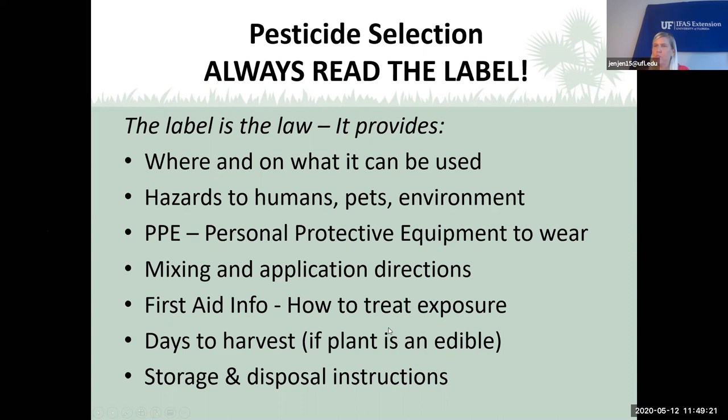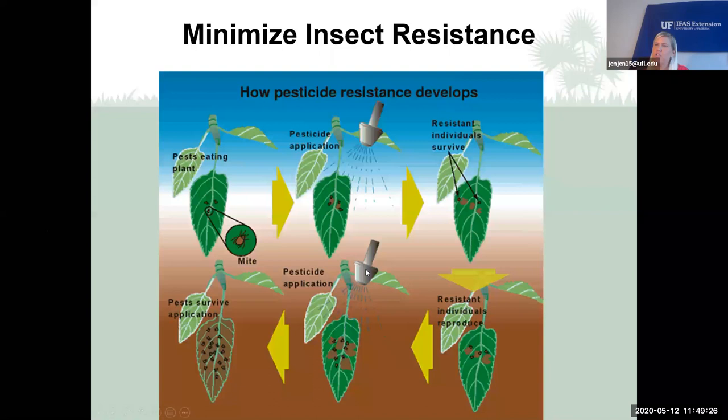Regarding insect resistance: if we continuously use the same product over and over on the same pest, they can build up a resistance until that insecticide no longer kills them. If you use a soap one time, try an oil the next time. Mix up your chemicals to keep the insects from building resistance.